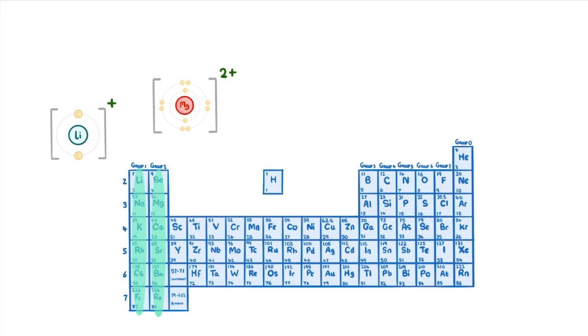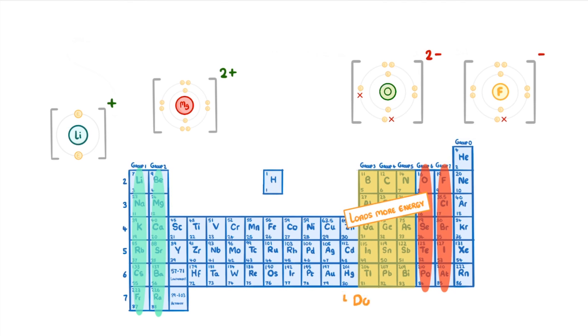And the same goes for group 6, which gains 2 electrons to become a 2 minus ion, and group 7, which has to gain 1 electron. However, the elements in groups 3, 4, and 5 would have to lose or gain 3 or 4 electrons, which would require loads of energy, and so this doesn't happen very often. And we generally don't see these elements as ions.